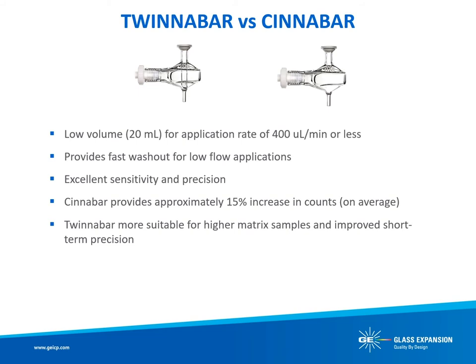The Cinnabar and Twinibar are the low-volume 20 mL designs of the Tracy and Twister respectively. These low-volume designs are recommended for faster washout when an uptake rate of 0.4 mL per minute or less is employed. Like the Tracy, the Cinnabar will provide slightly higher sensitivity, whereas the Twinibar, like the Twister, is more suitable for higher-matrix samples.